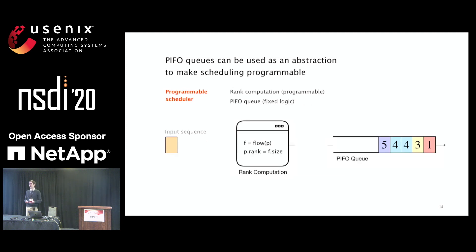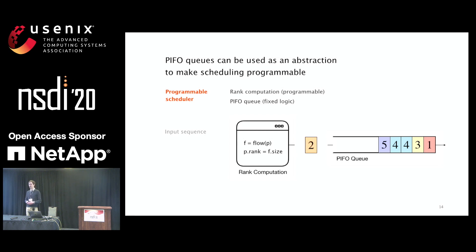To make a programmable scheduler we need two pieces. First, a rank computation where the operator designs algorithms that define the relative order of packets through ranks. Second, the PIFO queue that executes those ranks. When a packet is received, we compute its rank, and the PIFO queue pushes it following the relative order defined by that rank. That's how the PIFO abstraction works.